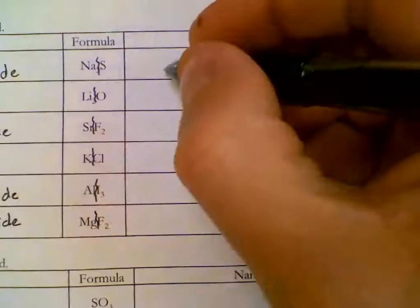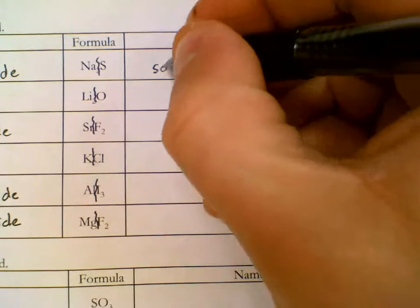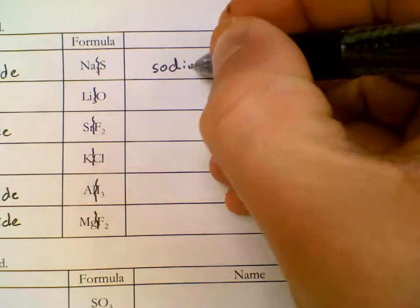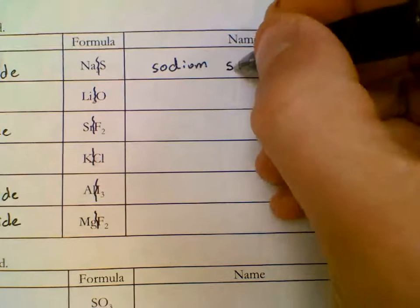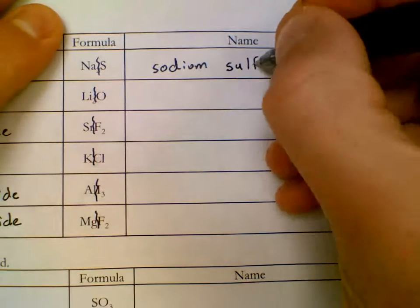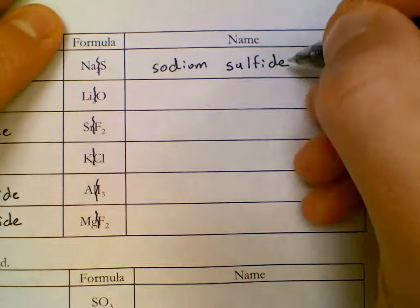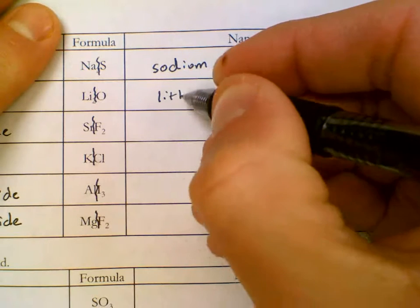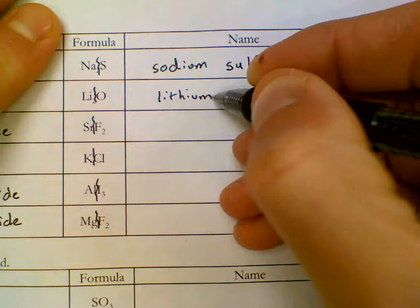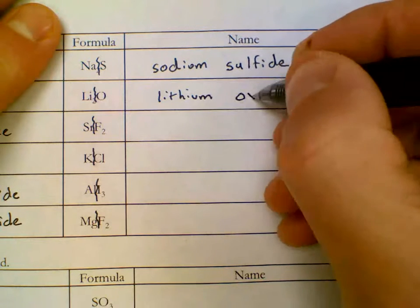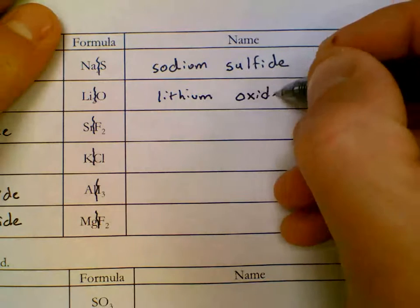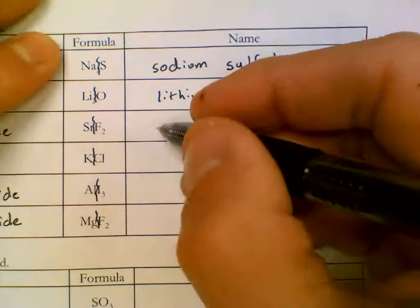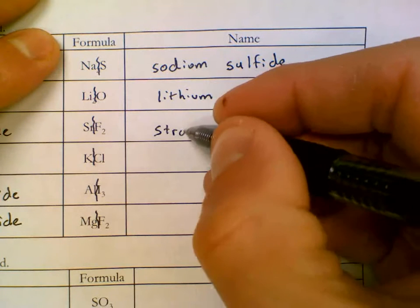On the right-hand side, we have sodium, Na. Don't care about that subscript. Sodium. And then S is sulfide. Li is lithium. We do not care about that subscript. O is oxide. We name the cation on the left-hand side. We name the anion on the right-hand side.